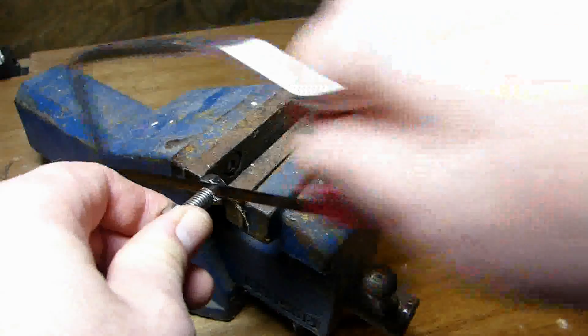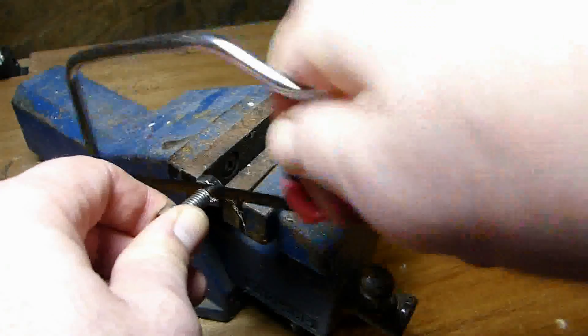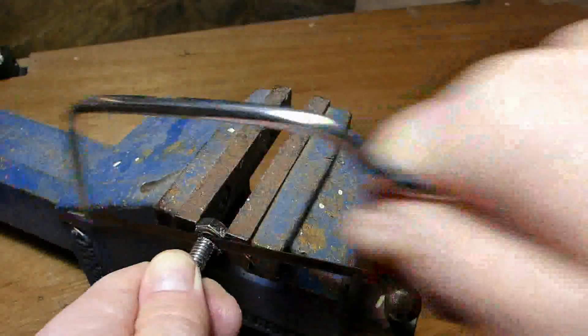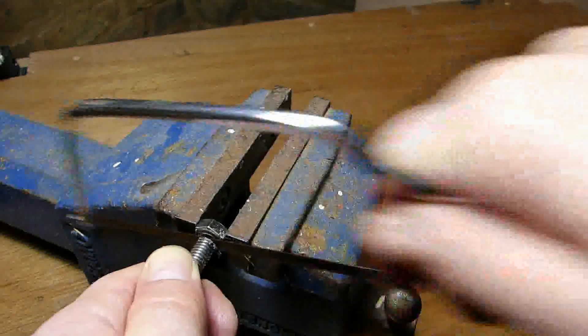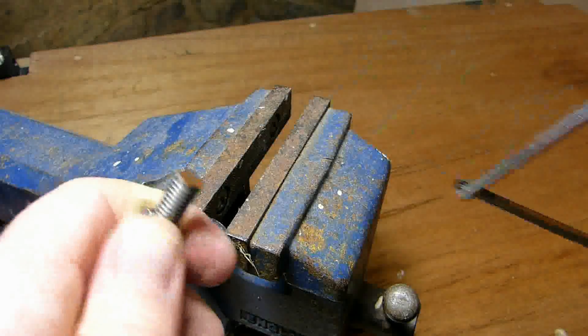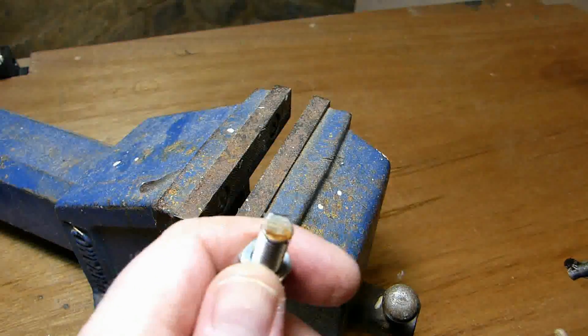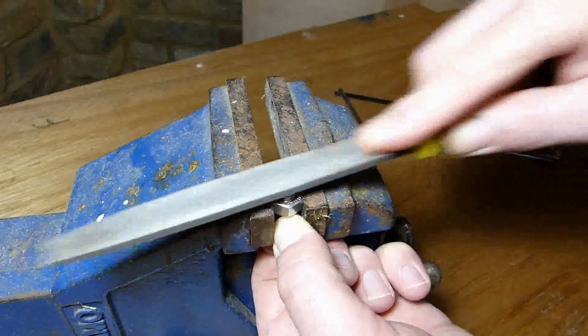The next task was to cut off the bolt head. I did this by clamping it into a vise and cutting it off with a hacksaw. I then filed away the rough edges with a file.